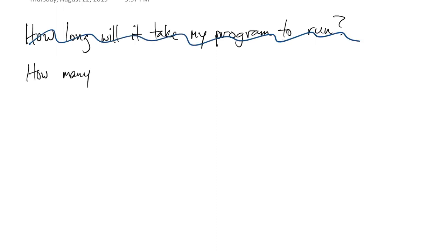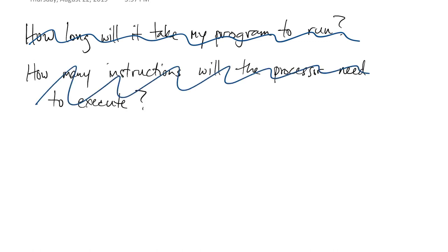So we could ask instead a more precise question: how many instructions will the processor need to execute? This is also really complicated. It depends on all kinds of implementation details. So we're going to reduce this question down to something more manageable, which is, how many operations will we perform on floating point values?